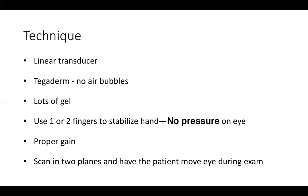Always set the proper gain, especially because the eye is an anechoic fluid-filled structure, so you will get posterior acoustic enhancement just beneath the eye, which can impair your ability to look at the optic nerve. In some cases you may actually want to turn up your gain because if the posterior chamber is completely anechoic, it may be difficult to see a retinal detachment or a vitreous hemorrhage. Lastly, remember to scan in two planes and have the patient move their eye during the exam — this is extremely important to make sure you don't miss a small retinal detachment.